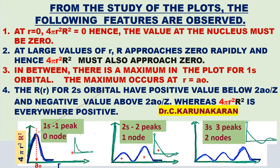In between the two extreme values there is a maximum in the plot. For the 1s orbital, the maximum probability of finding the electron occurs at r = a₀, the first Bohr radius.